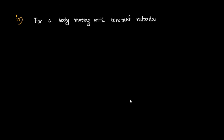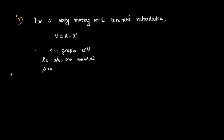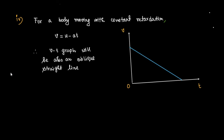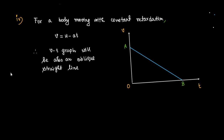Case 4: For a body moving with constant retardation, the expression of velocity is v = u - at. The v-t graph will be an oblique straight line AB with a downward slope. At t = 0, v = u, so OA = u on the graph, and the line AB has a downward curvature (negative slope).